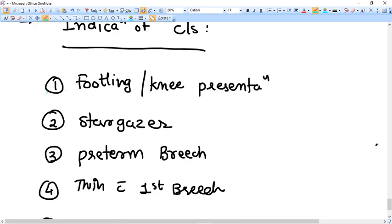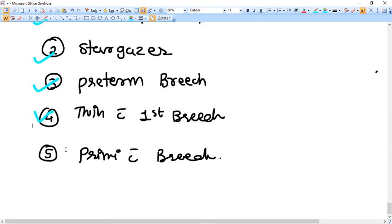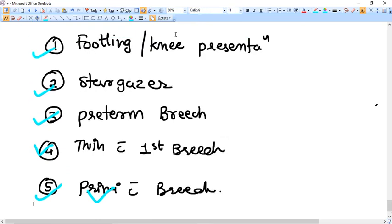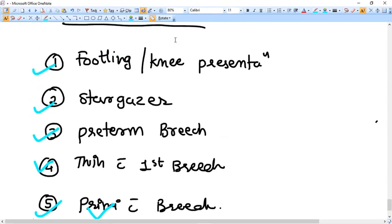For example, if the fetus is of footling presentation, stargazer, preterm breech, twins with first breech presentation, primigravida with breech, all these things you can think for caesarean section and you should prefer for caesarean section if you are not very experienced about breech deliveries, normal vaginal breech deliveries. Okay, so these are some indication of caesarean section.